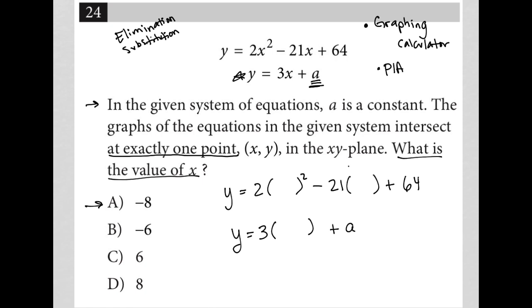So when I try answer choice A, I put a negative 8 in here for each of these. Best thing to do is to go to your calculator. When I multiply 2 times negative 8 squared, well negative 8 squared is 64 times 2 is 128. So I have 128 there. Then negative 21 times negative 8 is positive 168. So I add 168 to that. And then I add 64. So all of this would equal 360. So I'd have y equals 360.